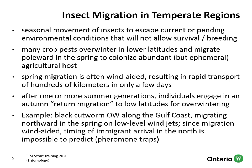Insect migration is another adaptation. One of the most famous examples is the seasonal movement of monarch butterflies from overwintering locations in Mexico northwards, which occurs over several generations each year. Many crop pests overwinter in lower latitudes and migrate polewards in spring to colonize abundant but temporary agricultural hosts. Spring migration is often wind-aided and can result in very rapid transportation — hundreds of kilometers in only a few days. You might be scouting a crop and not see a pest, then come back the next week and see lots of that pest when wind-aided systems dump pests into our area.